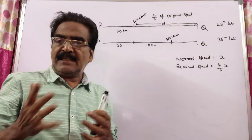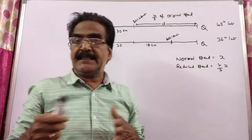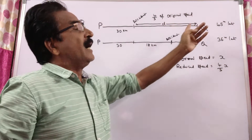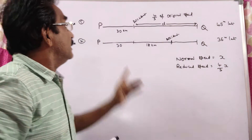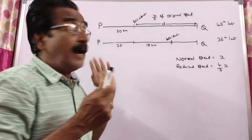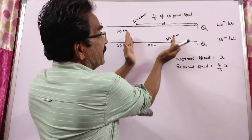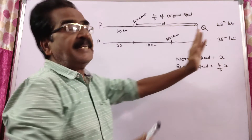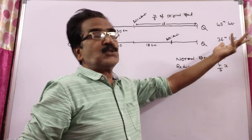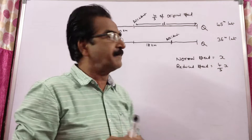after travelling 30 kilometers, a train meets with an accident and thereafter it travelled at 4/5 of its usual speed and reached 45 minutes late. That is Case 1. In the second case, had the accident occurred 18 kilometers further, it reaches 9 minutes earlier, meaning it is only 36 minutes late. 45 minus 9 is 36 minutes late.